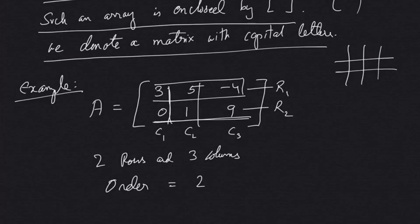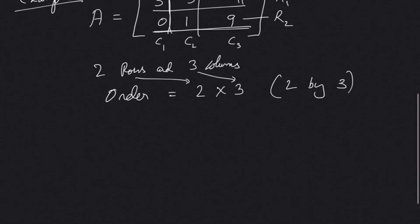In this matrix we have two rows and three columns, so the order of this matrix is defined as 2 by 3. Rows always come first, then columns. This is a matrix of order 2 by 3. Let's take another example.